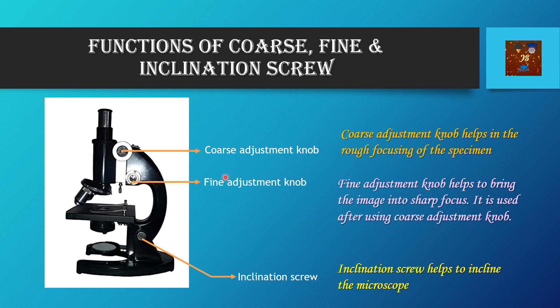Regarding the function of the coarse adjustment knob or coarse adjustment screw: it is the knob that helps in the rough focusing of the specimen. When a specimen is placed on the stage, we have to focus it in order to see it through the eyepiece. There are two types of focusing — rough focusing and fine focusing — and this knob helps a lot with the rough focusing.